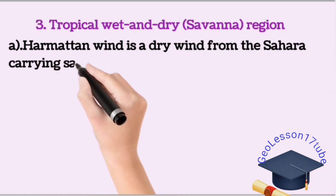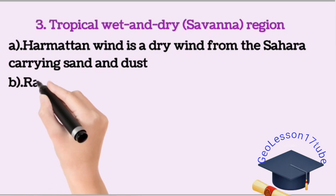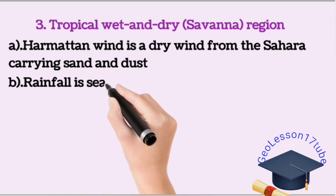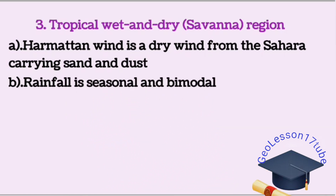This climate region is known for the effect of the harmattan wind, which is a dry wind that blows from the Sahara carrying dust. Rainfall is seasonal and bimodal, meaning it receives two seasons of rainfall — one during July to September and the second season during March, April, and May.